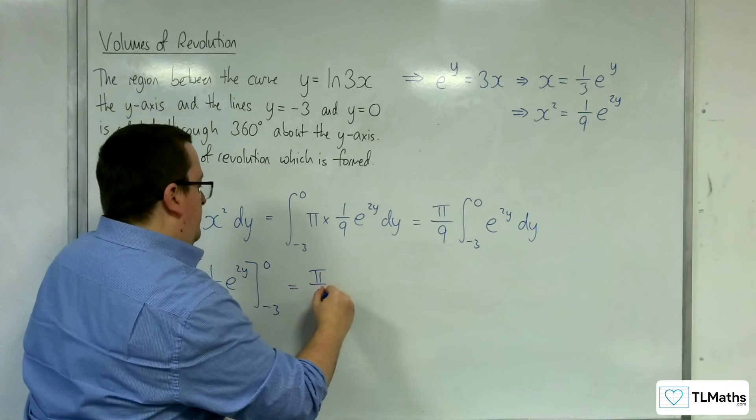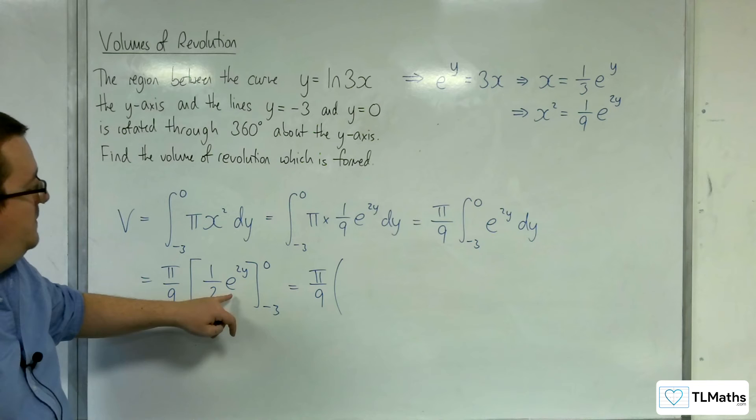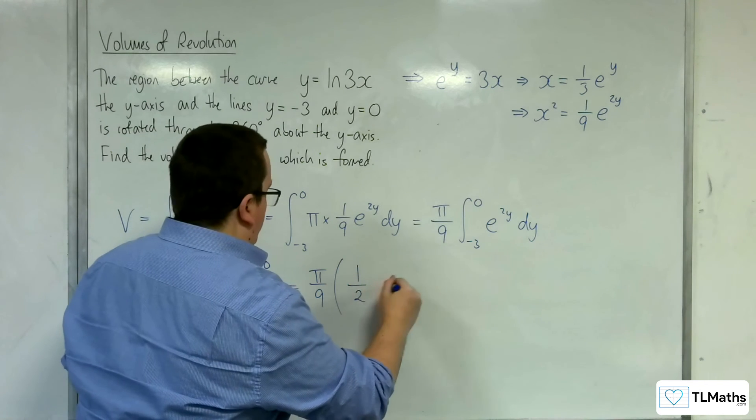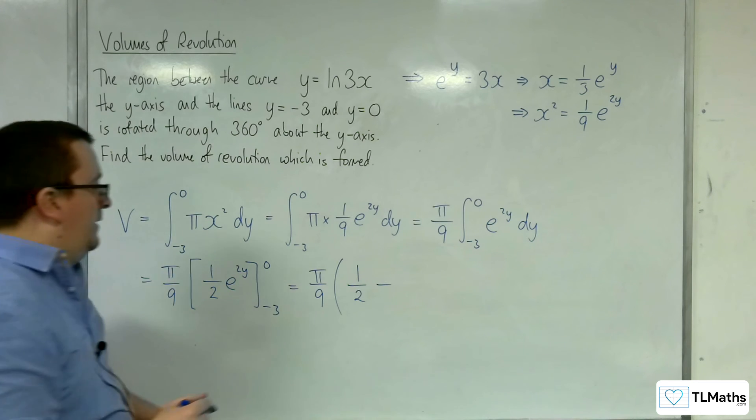So we have pi over 9 times, so substituting the 0 first, now e to the 0 is just going to be 1, so we're going to have a half times 1, so 1 half. Then take away, substituting in the minus 3, we're going to get a half times e to the minus 6.